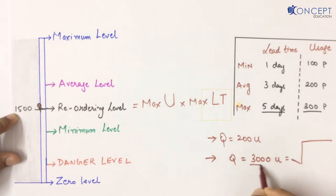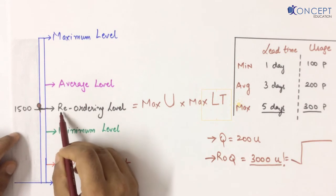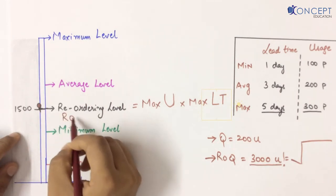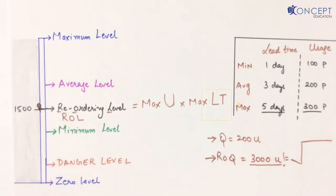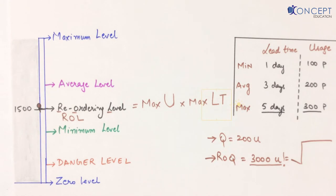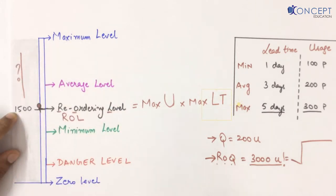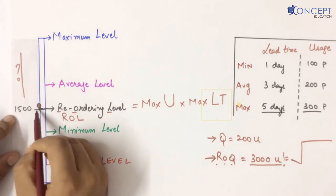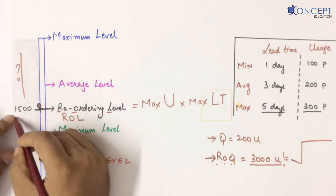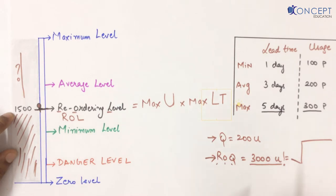I will place an order of 3000 units. Let's say for example, according to these terms. This 3000 is my ROQ — Reorder Quantity. What we see at the end is the order quantity from the EOQ. So as soon as my ROL level comes — as soon as my inventory reaches only 1500 units — I will order my reorder quantity of 3000 units.